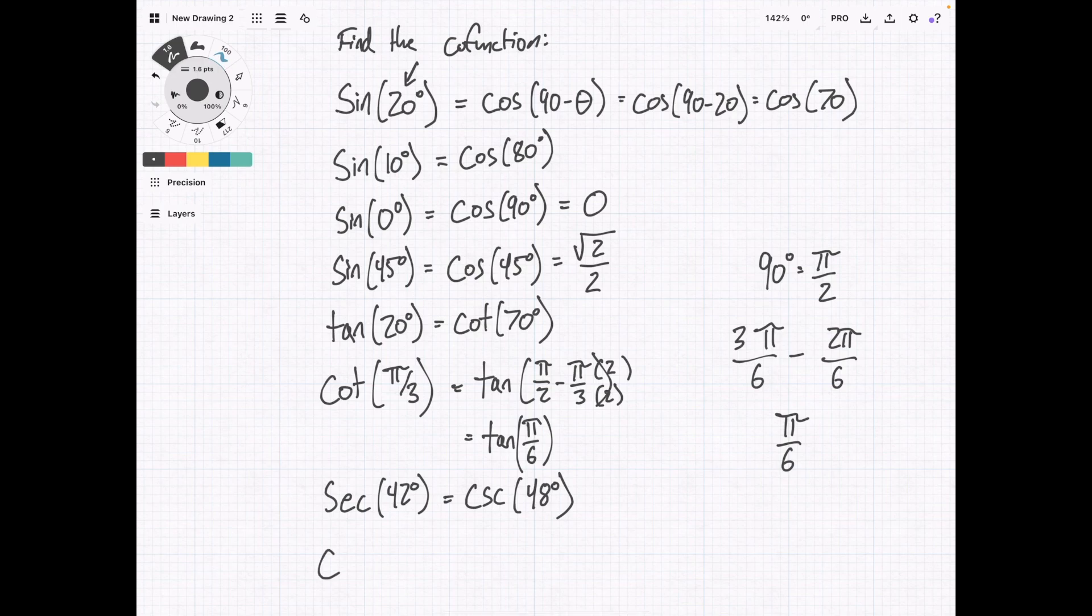And we can do one more with pi. Cosine of pi over 8 equals. We know the co-function is sine. Now we need to do what we did before. We have pi over 2 minus pi over 8. In this case, we're going to multiply this side by 4 over 4 to get like terms. 4 pi over 8 minus pi over 8. And that's going to equal 3 pi over 8. So that's our final answer.